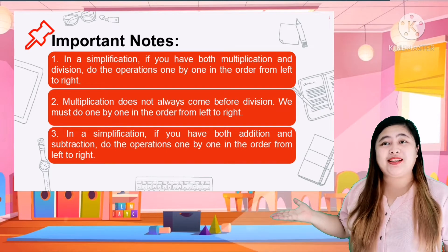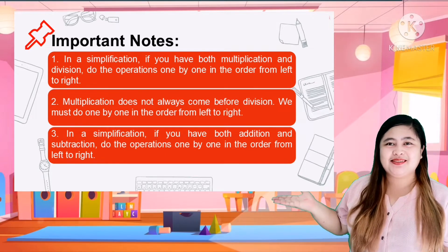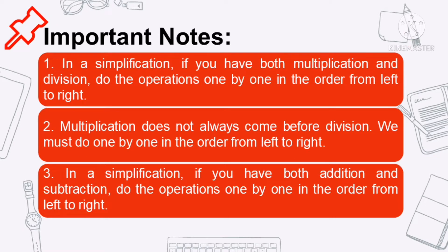What are the important notes that I've given to you last week? In simplification, if you have both multiplication and division, do the operation one by one in the order from left to right. Second, multiplication does not always come before division. And number three, if you have both addition and subtraction, do the operations from left to right.